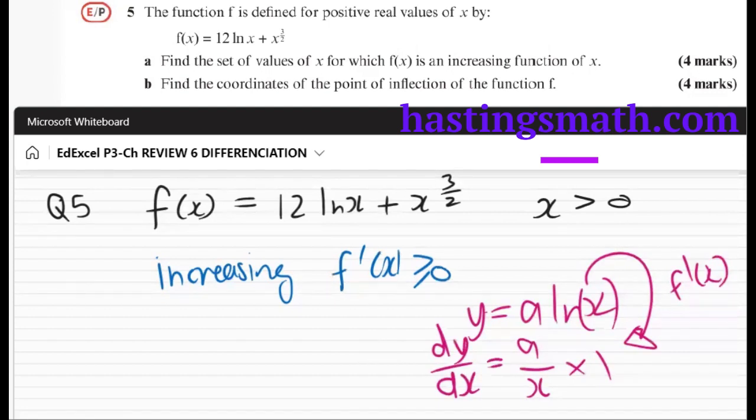So let's call it f'(x), just call it whatever they call it in the question. So f'(x) equals 12, which is our a value, over x on its own, and then this obviously should be quite familiar, so 3/2 times x, and 3/2 minus 1 is a half, x to the power of a half.